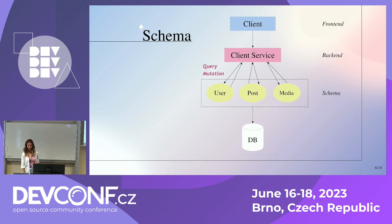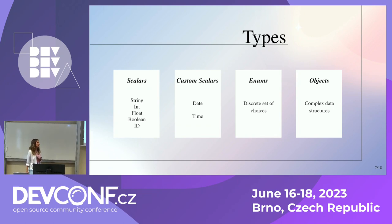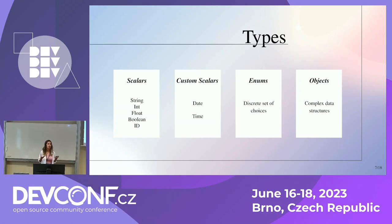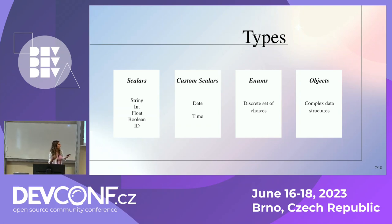Now, what is the schema and how do we construct it? First, we need to understand types. There are four main types in GraphQL. The first is the scalar — basic types like integers, strings, and booleans. The second is custom scalars, used when predefined types aren't enough, for example to express date or time variables. The third is enumerators, used when you have a discrete set of choices — for example, defining a role as admin, guest, default, or manager. The fourth is the object, which is a combination of all previous types and forms complex data structures.